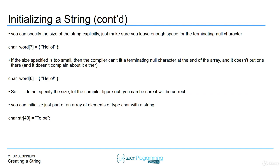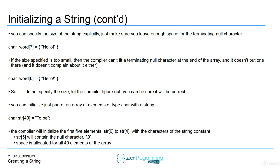You can also initialize just part of an array of type char with a string. So if you actually created a size that was really large and only assigned a couple of characters, that's fine — you're only initializing some of the characters and all the other characters are just going to be empty. What will happen is the compiler will initialize the first five elements — str[0] to str[4] — with the string constant, and str[5] will contain the null character. Space is still going to be allocated for all 40 elements in the array, but only five of those plus the null character are going to be used. Again, best practice: don't specify a number inside the size brackets — just assign it a string literal using double quotes.